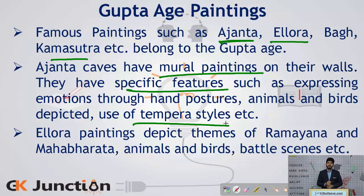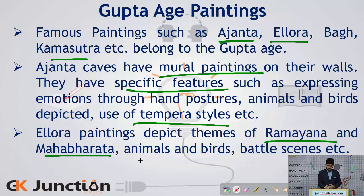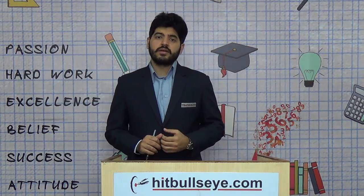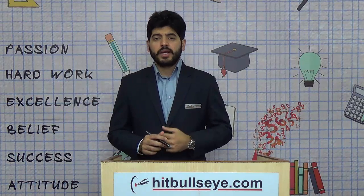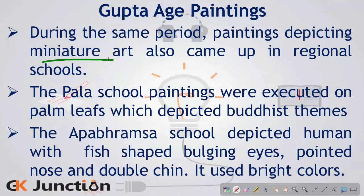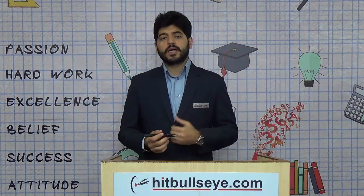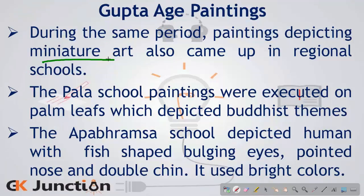The Elora paintings featured a very popular theme of the Ramayana and Mahabharata. Apart from these, animals, birds, and battle scenes from the epics were also depicted. In the same Gupta period, there was also miniature art done in regional schools outside the court. The most important of these being the Pala school and the Appabhramsha school.